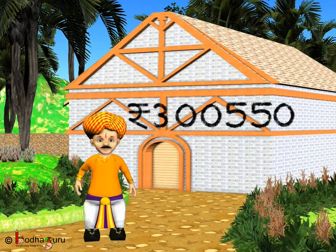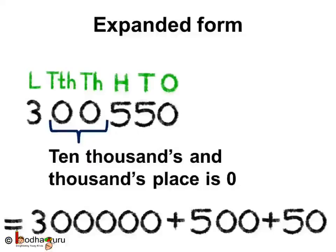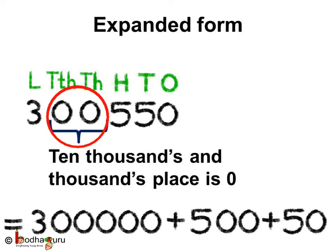Maniram purchased a house for three lakhs and five hundred and fifty rupees. Write the cost in expanded form. So 3,00,550 has three lakhs, zero ten thousands, zero thousands, five hundreds, five tens and zero ones. That is three lakhs plus 500 plus 50. As there are zeros at the ten thousands and thousands place, we ignore them and do not write zero ten thousand and zero thousand.